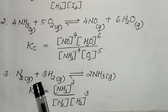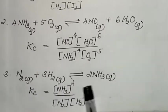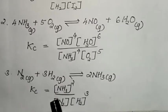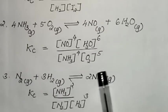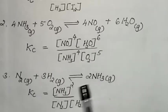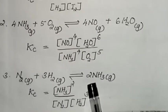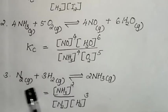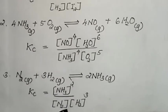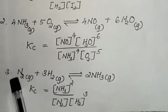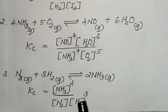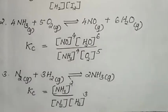Another example: N₂ + 3H₂ reversibly gives 2NH₃ gas. Here Kc = [NH₃]² / [N₂]¹ × [H₂]³, since the stoichiometric coefficient of NH₃ is 2, N₂ is 1, and H₂ is 3.